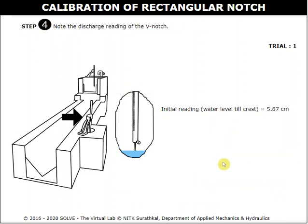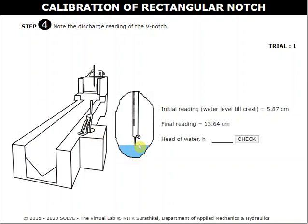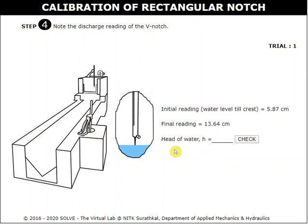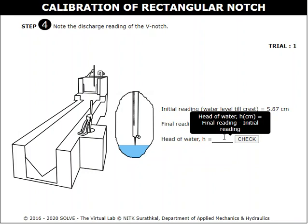Again, adjust the knob of the hook gauge over the V-notch to obtain a changed water level.